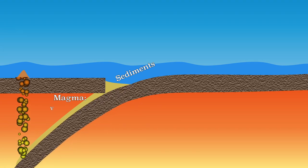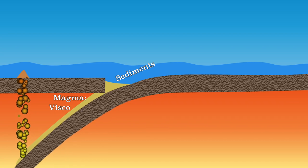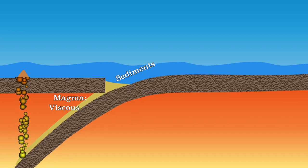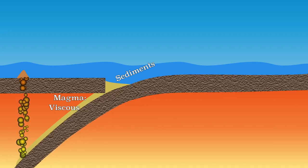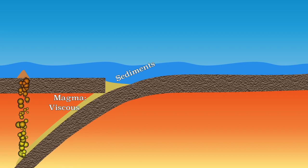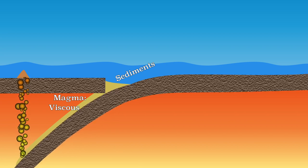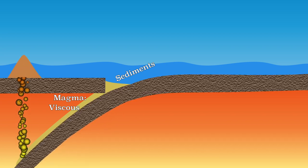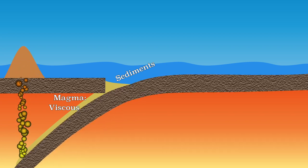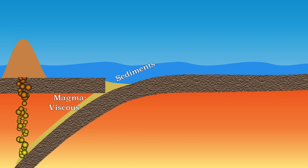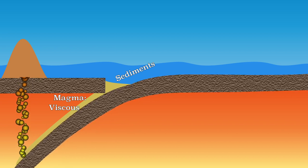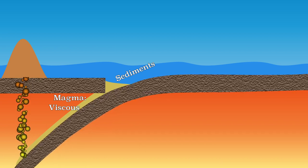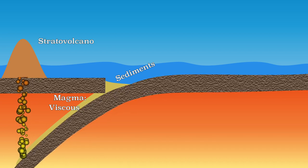Because the magma has a different composition due to the addition of sediment, it is very viscous, also called a viscous liquid. The viscous magma does not flow far away during an eruption. The volcano is therefore not very wide but very high. This type of volcano is called a stratovolcano.